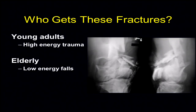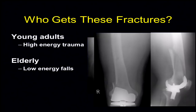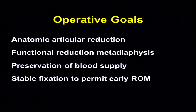There is a bimodal distribution — we see this in many areas and it's true here as well. Higher energy mechanisms for younger patients and lower energy falls for older patients. We want to do what we do elsewhere in the body: restore length, rotation, and alignment, and get people moving.